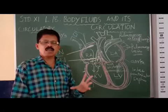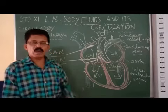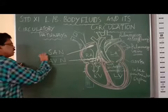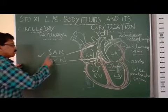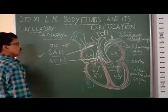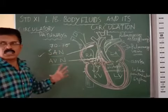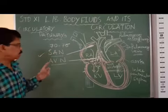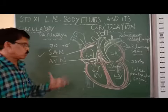The electric potential that occurs from the SA Node generates 70 to 75 times the heart beat. The entire beating of the heart is due to the electric impulse and action potential that occurs. However, all electric impulses may not produce the action potential of the heart.